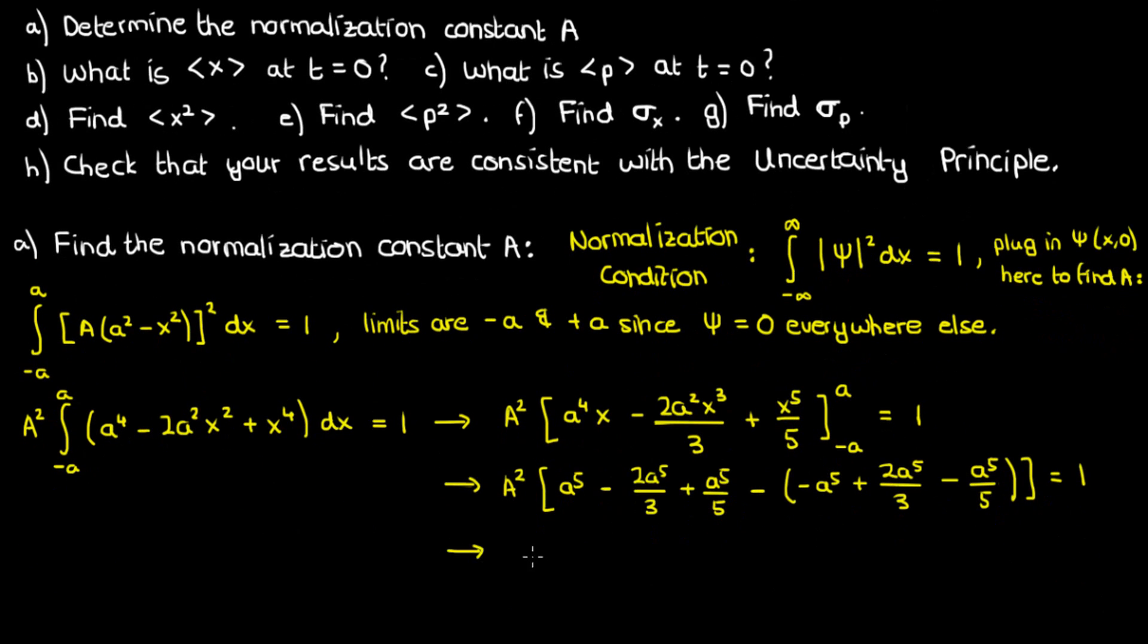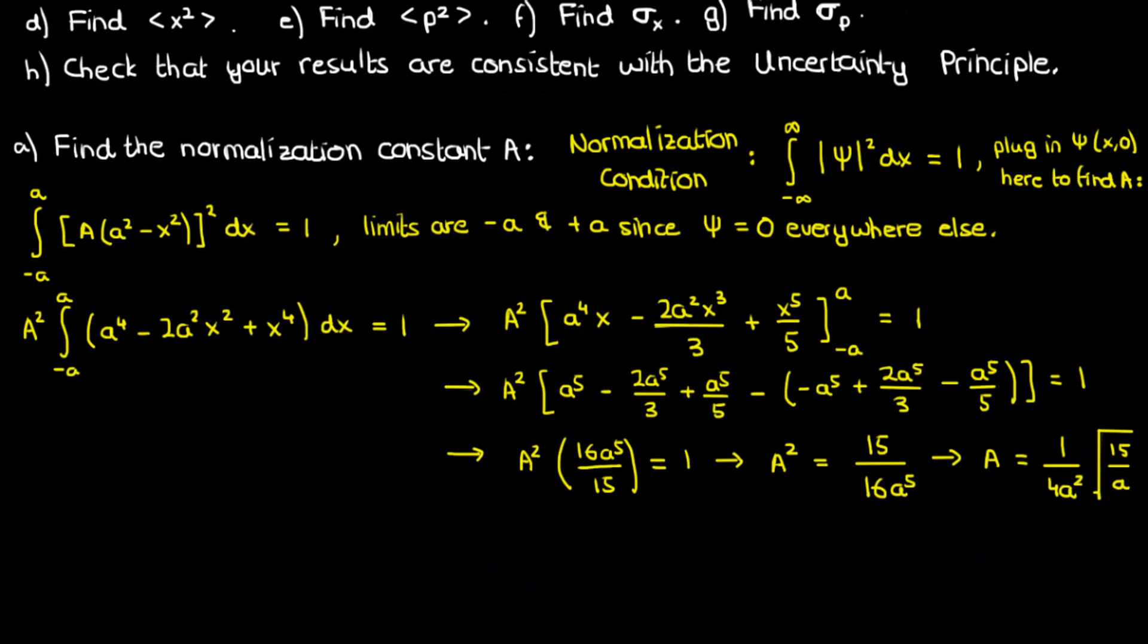Now we add all these fractions involving a⁵, and we find that A² × 16a⁵/15 = 1. Solving for the normalization constant, we get A² = 15/16a⁵, so A = 1/(4a²)√(15/a). So now we have our normalization constant A.